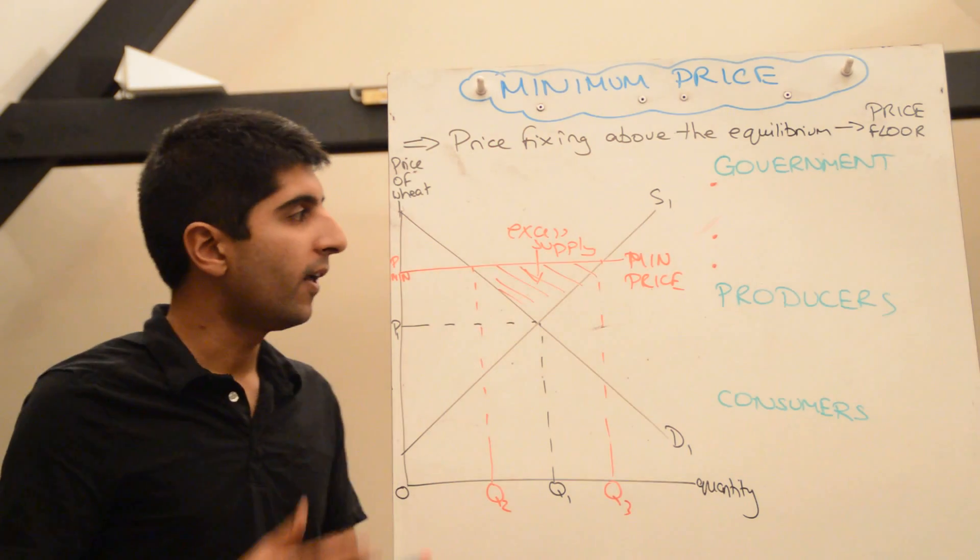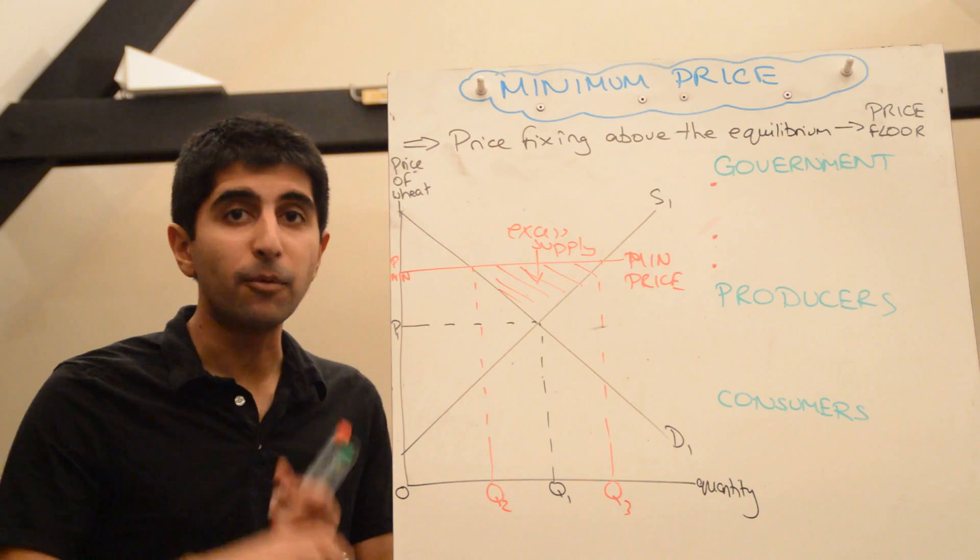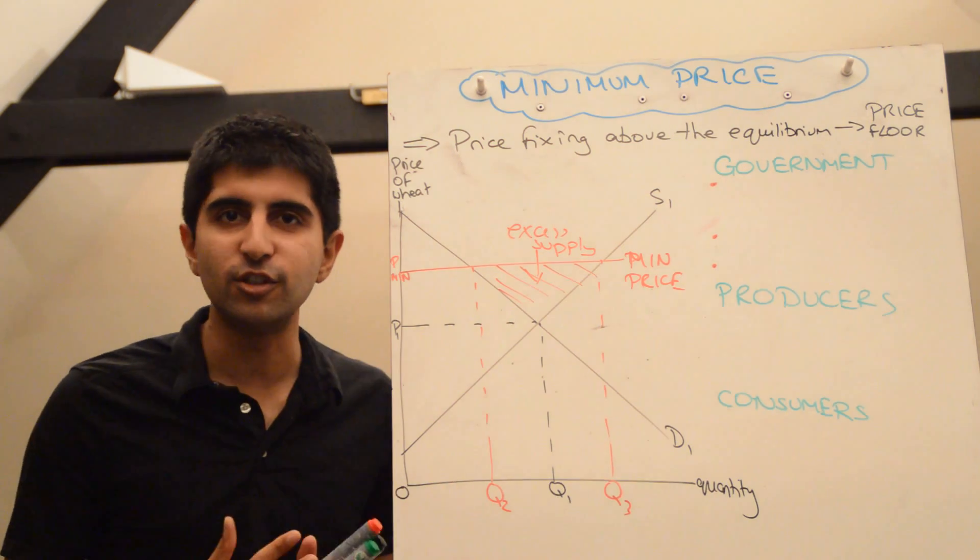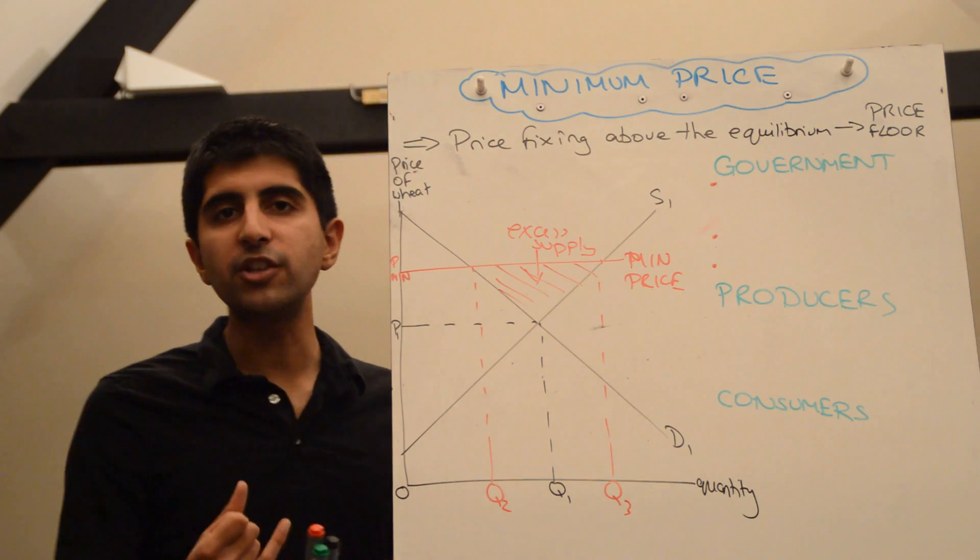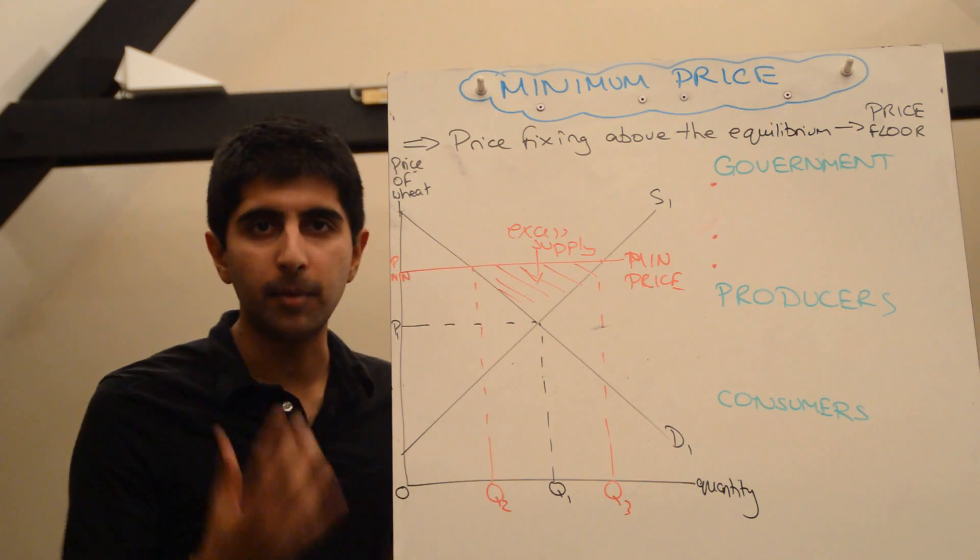Classical economists argue that unemployment caused by a minimum wage is a reason why a minimum wage should not be introduced. Also known as real wage unemployment, a big argument free market economists make against a minimum wage.